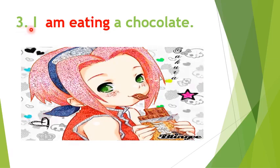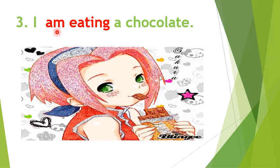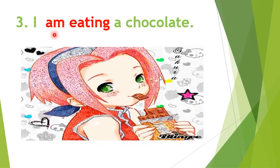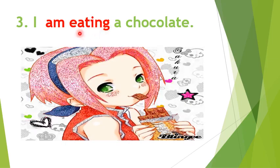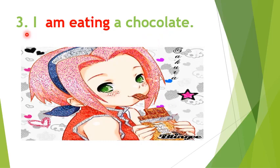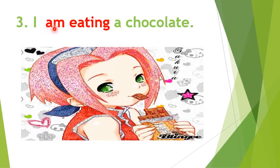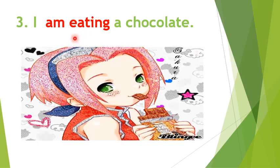Number 3: I am eating a chocolate. In this sentence, 'I' is the subject. 'Am' is the helping verb and it is always used with the subject 'I'. 'Eat' is the main verb and we have added -ing with it, so it becomes 'eating'. 'A chocolate' is the object. So, whenever the helping verb 'am' is there and the verb with the -ing form is given, the sentence belongs to present continuous tense.